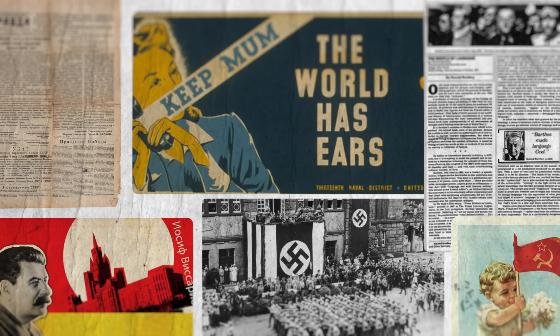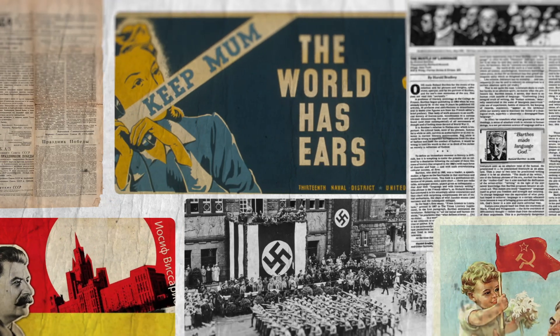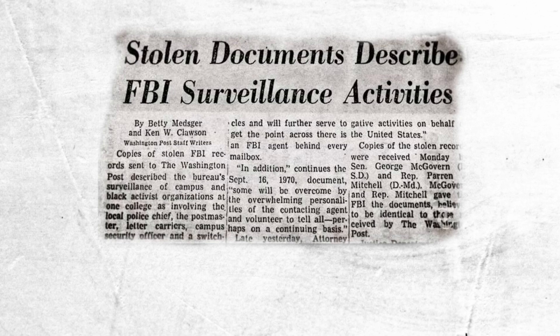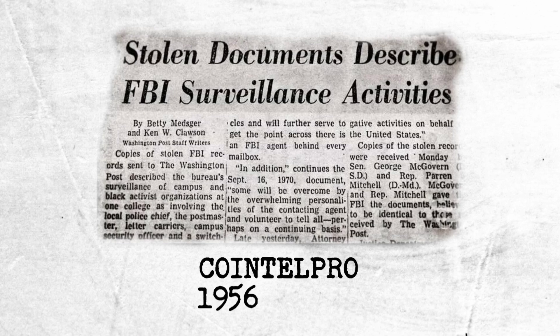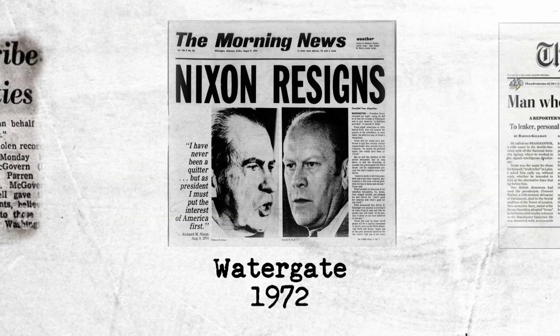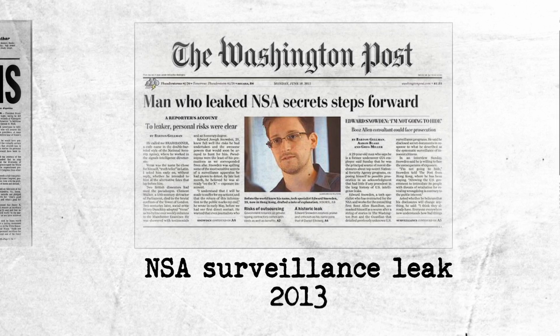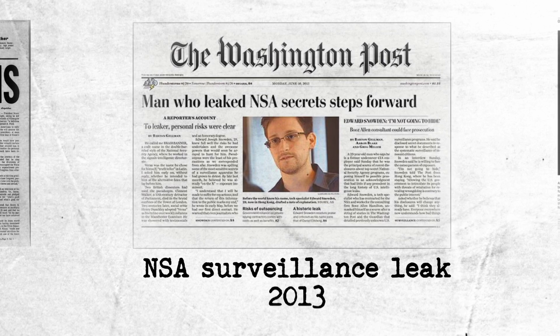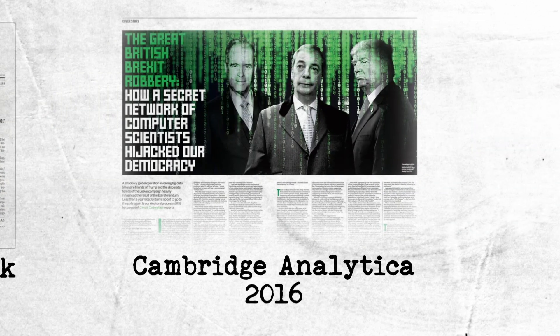Orwell wrote 1984 as a warning against the dangers of totalitarianism and drew inspiration from the oppressive regimes of his time, such as Nazi Germany and the Stalinist Soviet Union. However, his critique extends beyond these historical examples and targets the potential for any government to exploit technology for the purposes of control and manipulation.